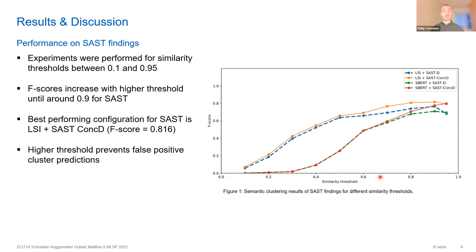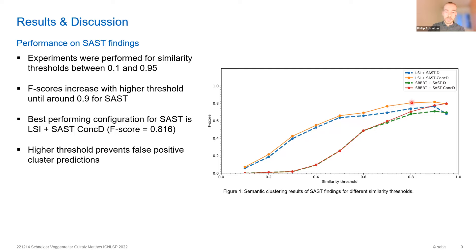Looking more into the SAST dataset performance, we tested LSI and SBERT for different similarity thresholds. In general, the higher the similarity threshold, the better the F-scores were, mainly due to increased precision and reduced false positives. The concatenated descriptions — providing slightly longer texts — also led to an increase in performance. In the end, the best configuration was latent semantic indexing plus the concatenated descriptions, though at higher similarity thresholds SBERT catches up with LSI.